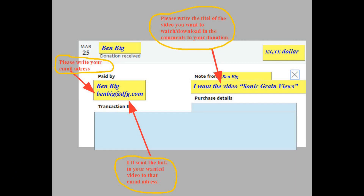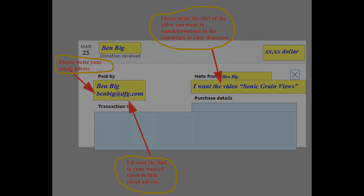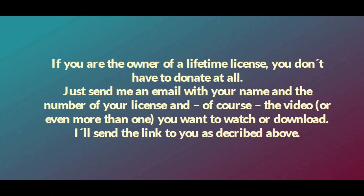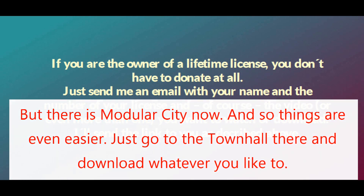Here is how you get it. First, you donate via PayPal an amount of your choice. Mention an email address you want the video link sent to, and write which video you want to view in the comments of your payment order. Second, PayPal sends your money, your email address, and the title of your wanted video to me. Third, I'll send a link to your video to the email address you mentioned with your payment. Fourth, enjoy your video — you can download it now. If you are the owner of a lifetime license, you don't have to donate at all. Just send me an email with your name and the number of your license and, of course, the video or even more than one you want to watch or download. I'll send the link to you as described above.